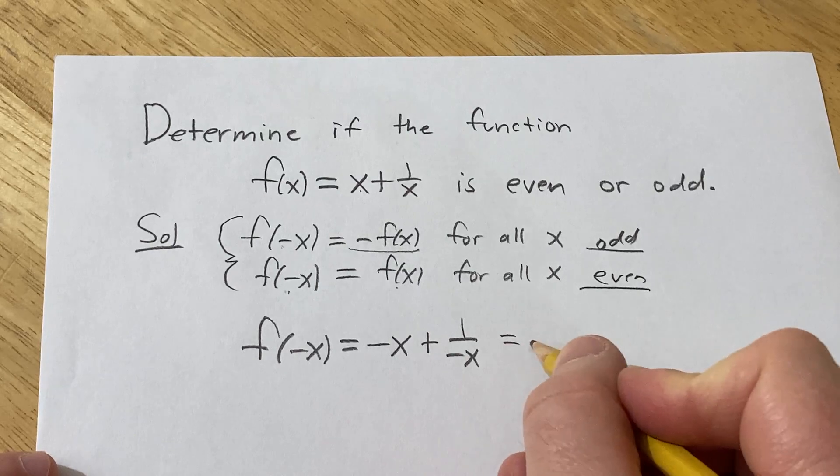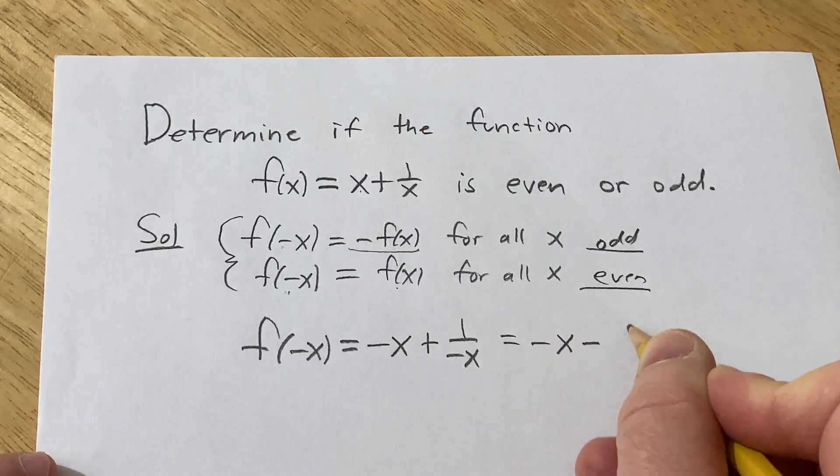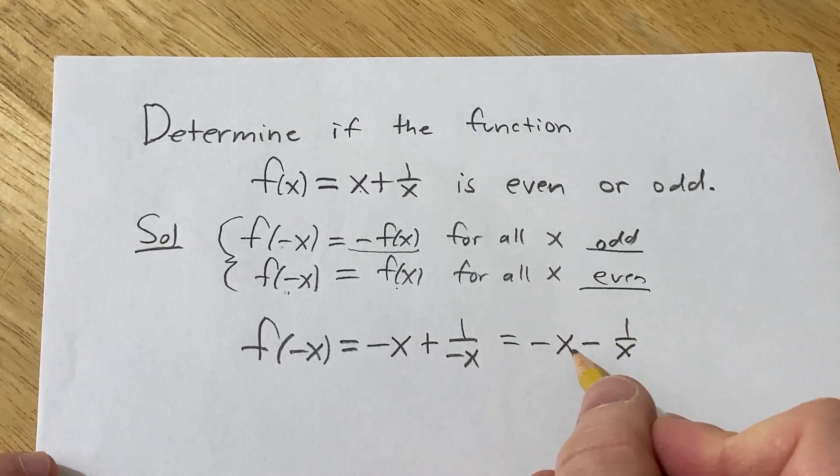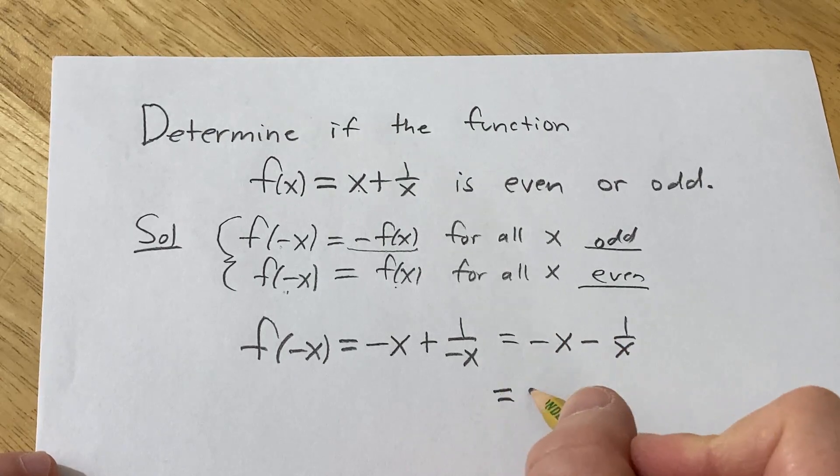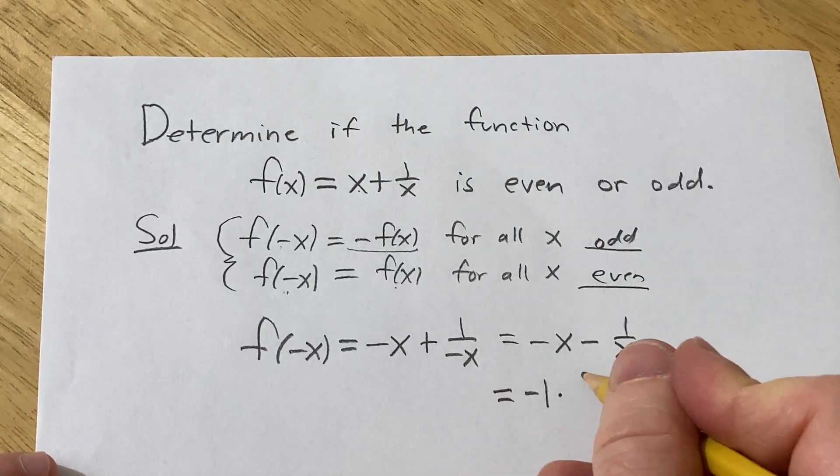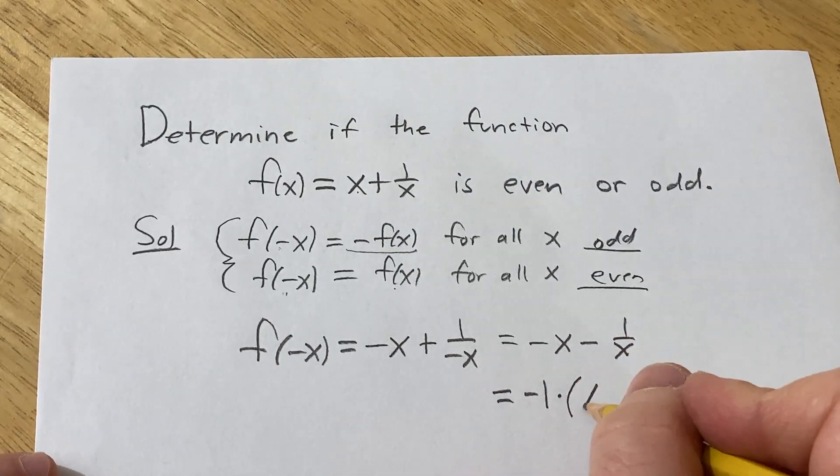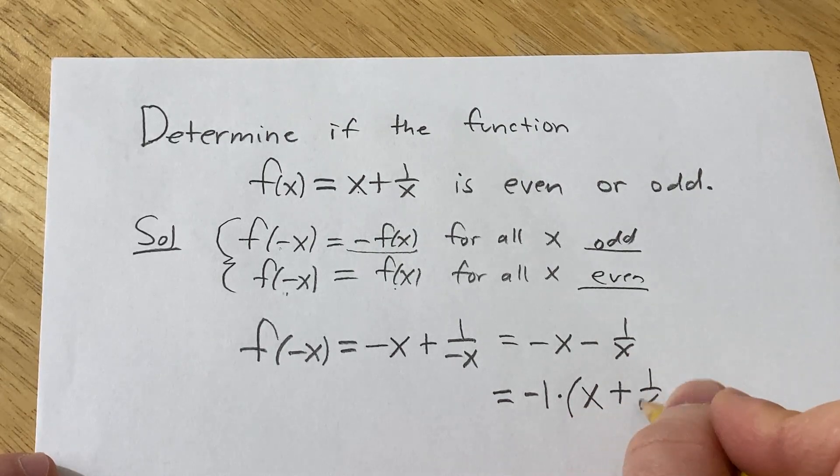So this is really negative x minus 1 over x. Then you can pull out a negative 1 here, so this is negative 1 times parentheses x plus 1 over x.